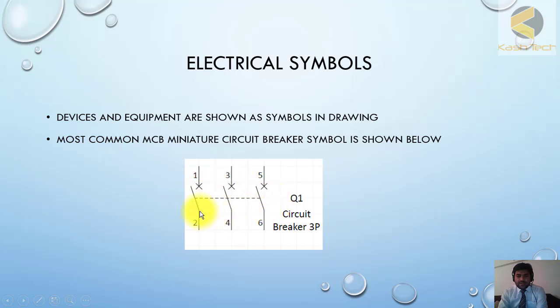When it is shown on the drawing, it is shown schematically like this. This is the way you represent a breaker. You can see here a cross symbol is used for the breaker, showing that this circuit can break the current. There are three poles - we can say red, yellow, blue - and these are the terminal numbers: one, three, five, two, four, six.